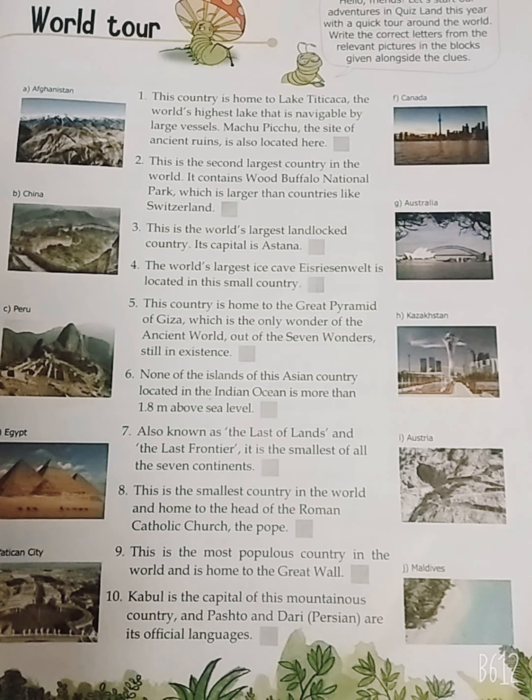Sixth: none of the islands of this Asian country, located in the Indian Ocean, is more than 1.8 meters above sea level. Asia ka yeh desh Indian Ocean mein sthit hai aur iske kisi bhi island ki unchai samudra se 1.8 meter se zyada nahi hai. Your answer is J — Maldives.